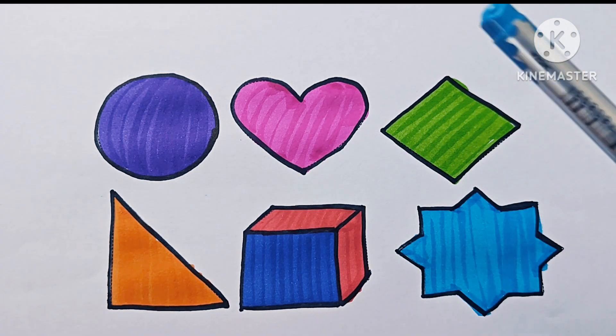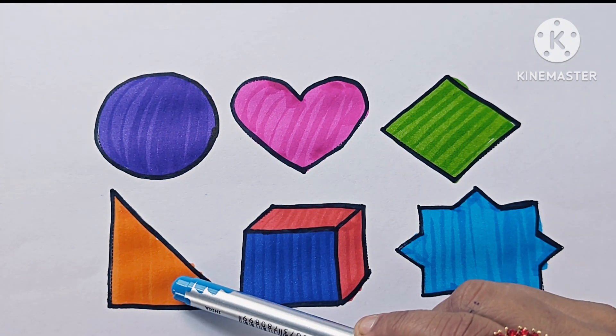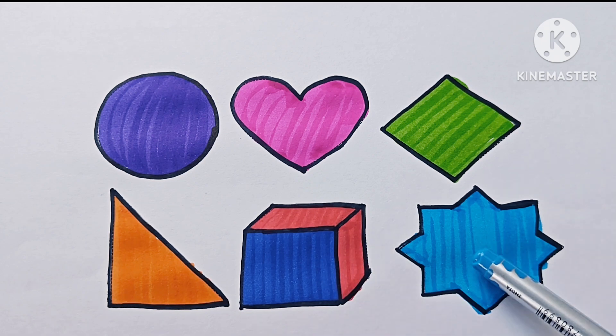Circle, heart, rhombus or diamond, right angle triangle or right triangle, cube, 8-pointed star.